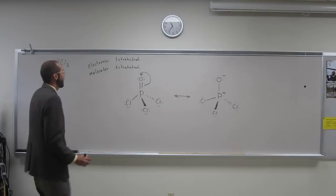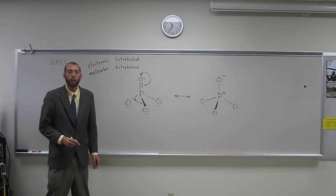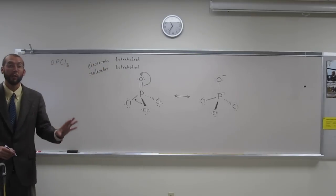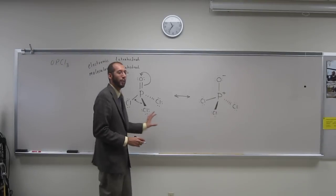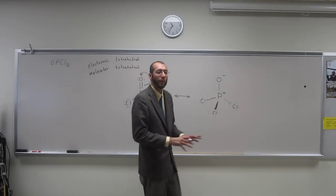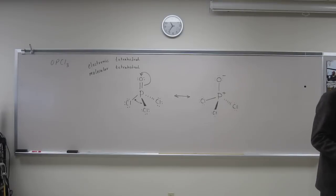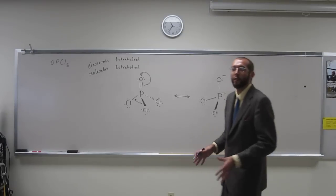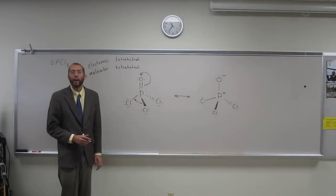What would you predict the bond angle to be here? 109. 109.5 would be a good prediction, right? But do you recall, and remember, we didn't talk very much about this, but when you have a big central atom, do you remember what it does to that bond angle? Yeah, it pushes it down a little bit. So you would expect this to be less than 109.5, okay?